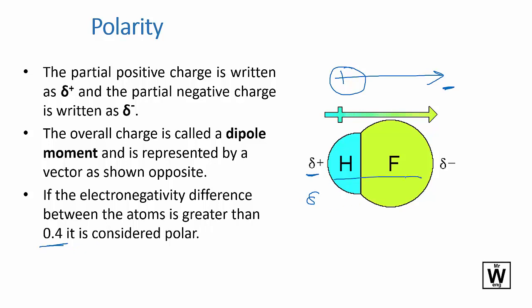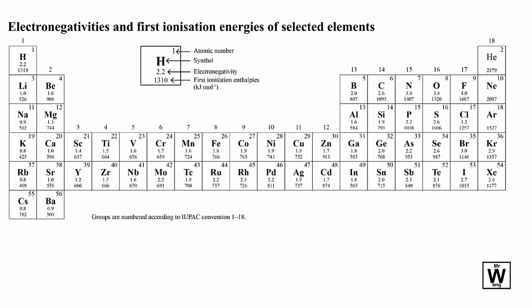So just have a quick look at the periodic table for this one: hydrogen and fluorine. The electronegativity from your data booklet, hydrogen's 2.2, fluorine's 4. So 4 minus 2.2 is greater than 0.4, so that is a polar, actually a very polar bond.